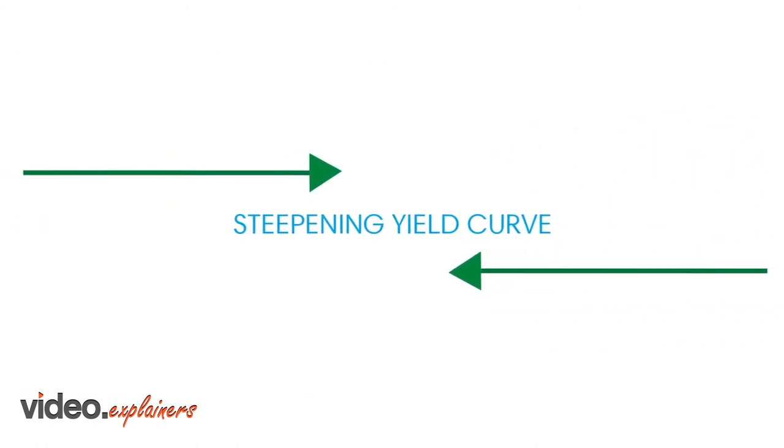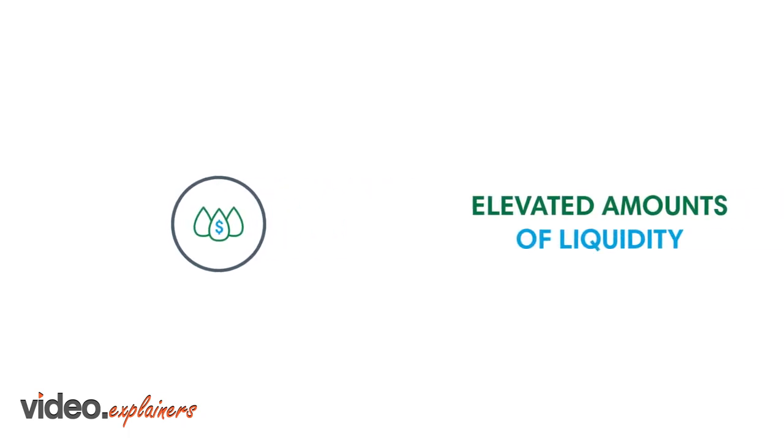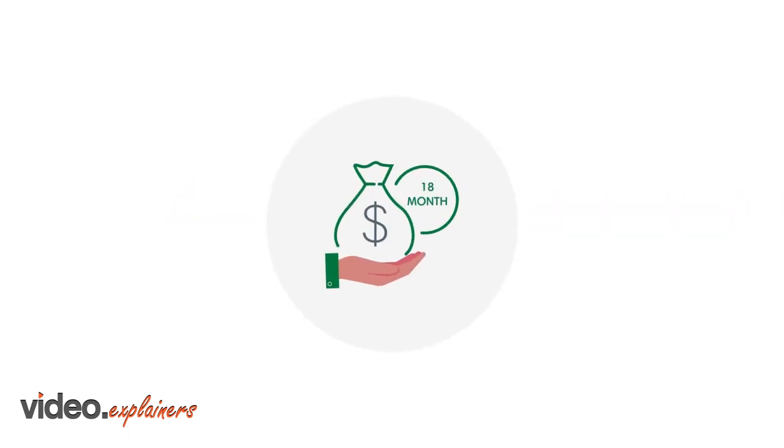To illustrate this point, consider this example. You want to fund with an intermediate-term advance, but prefer to delay the disbursement because you have elevated amounts of liquidity right now.